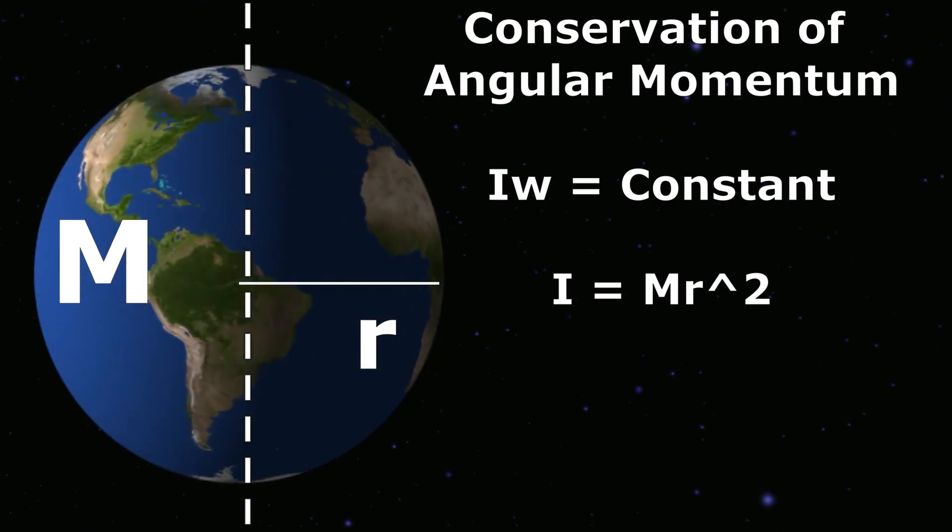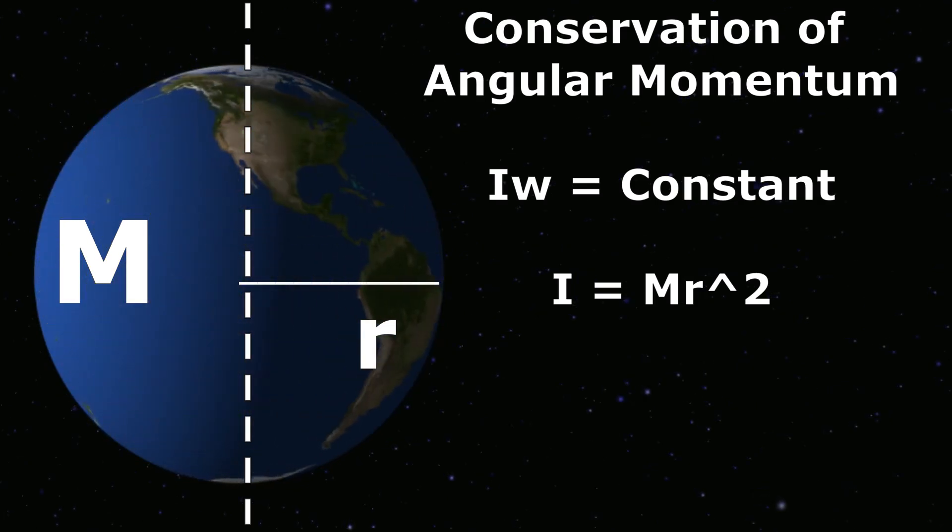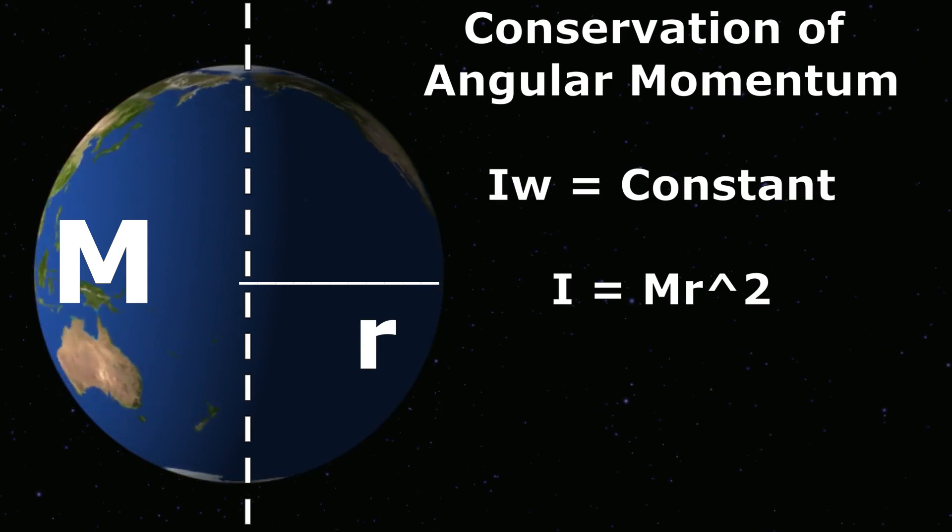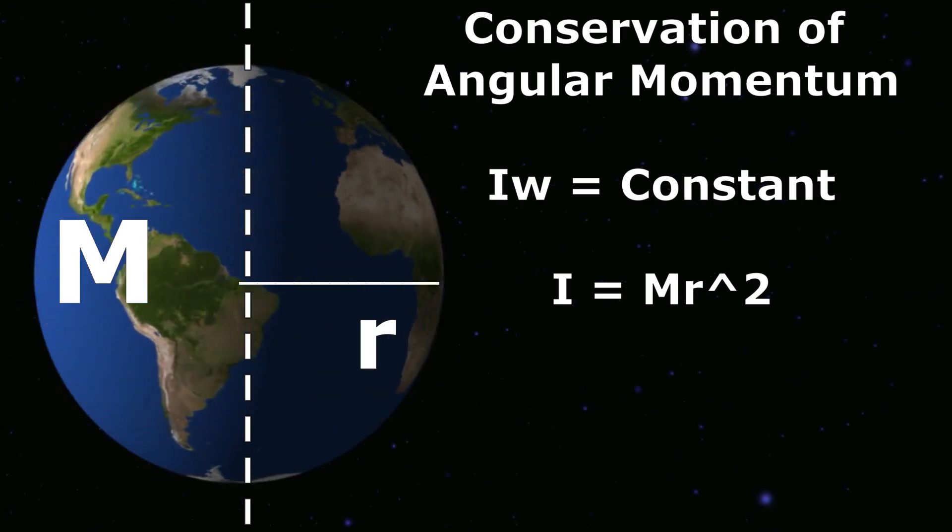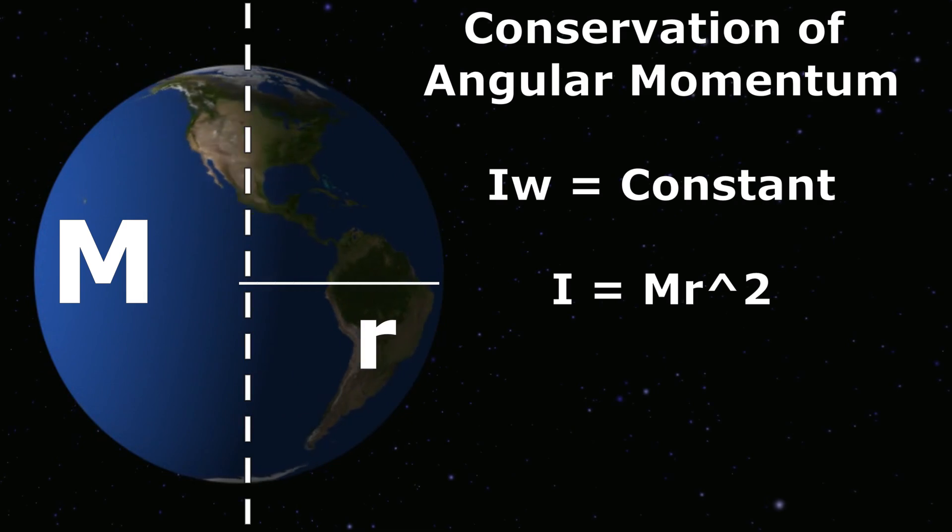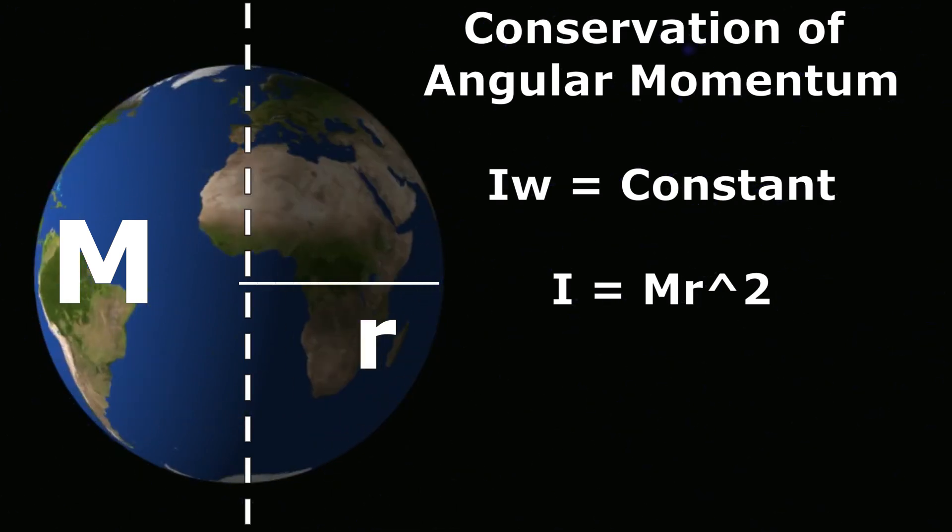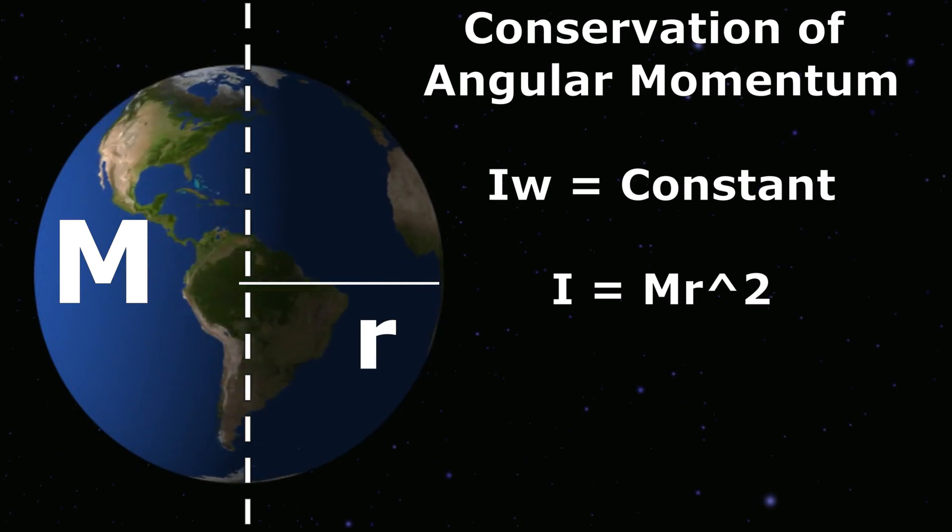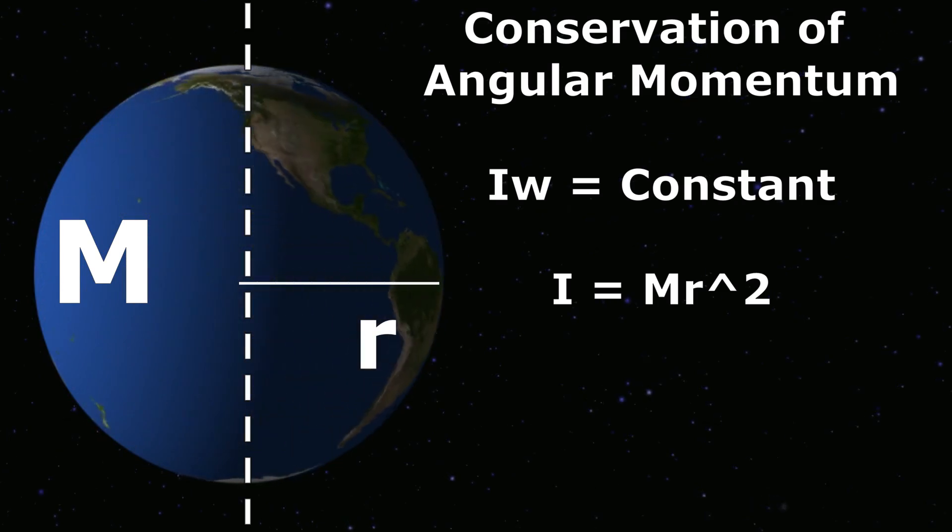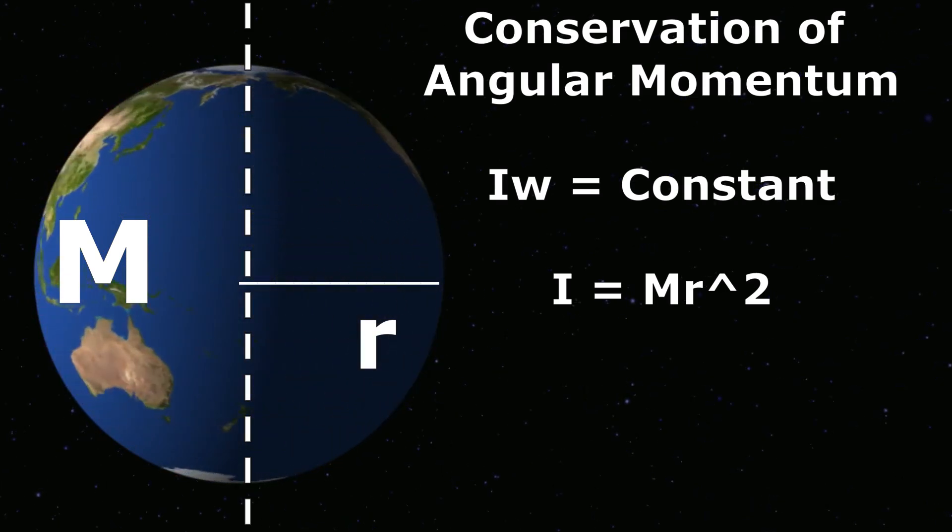Here, I is given by the product of mass of the object and square of its perpendicular distance from the axis of rotation. So, we can write I is equals to m r square. You can see from the formula that as the r decreases, the moment of inertia I also decreases.